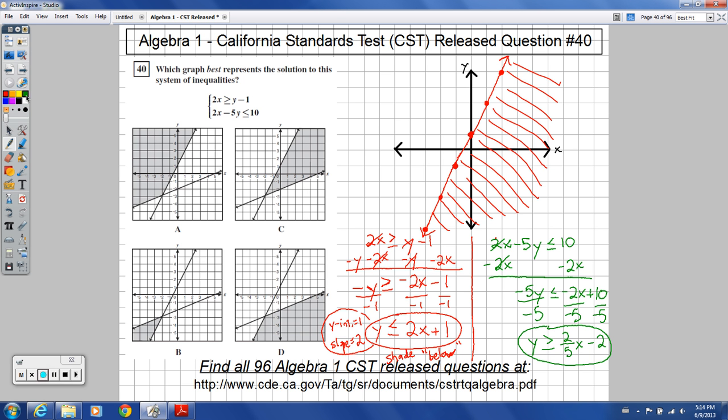In green we've got y greater than or equal to 2 fifths x minus 2. Over here the y intercept is at negative 2. And the slope is 2 over 5. So when we graph that we would have a y intercept at negative 2. That's going to be down 1, 2.